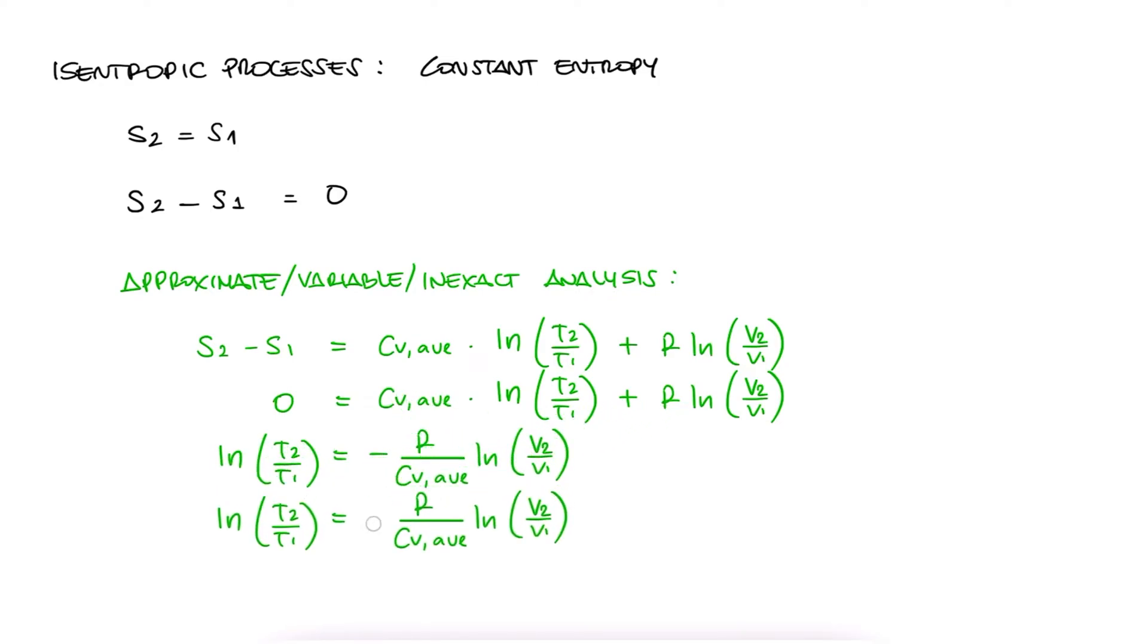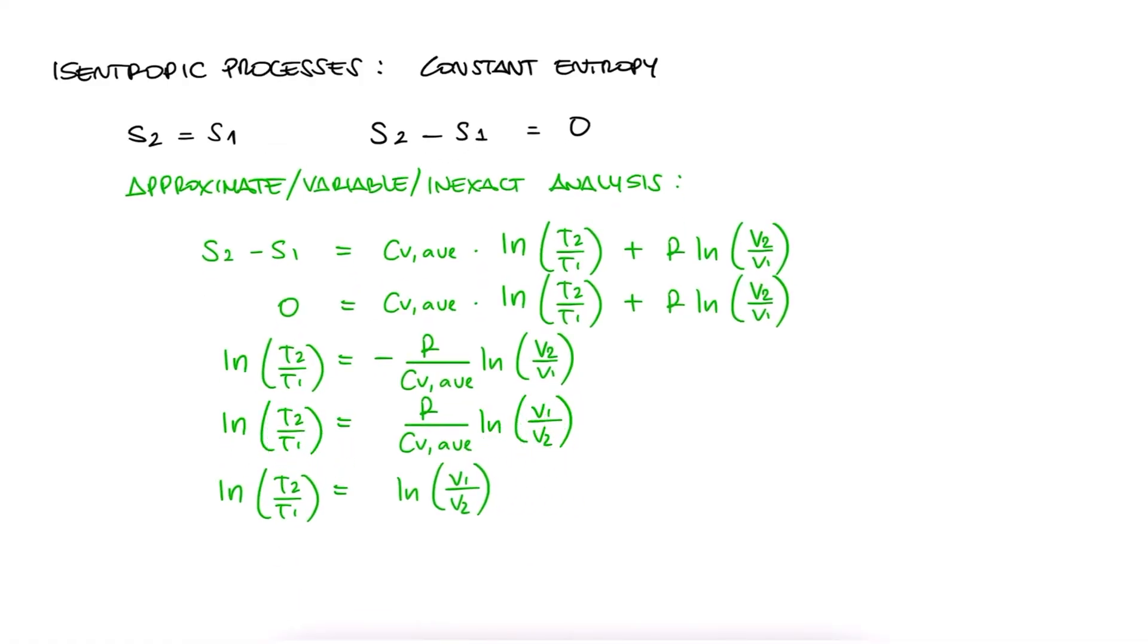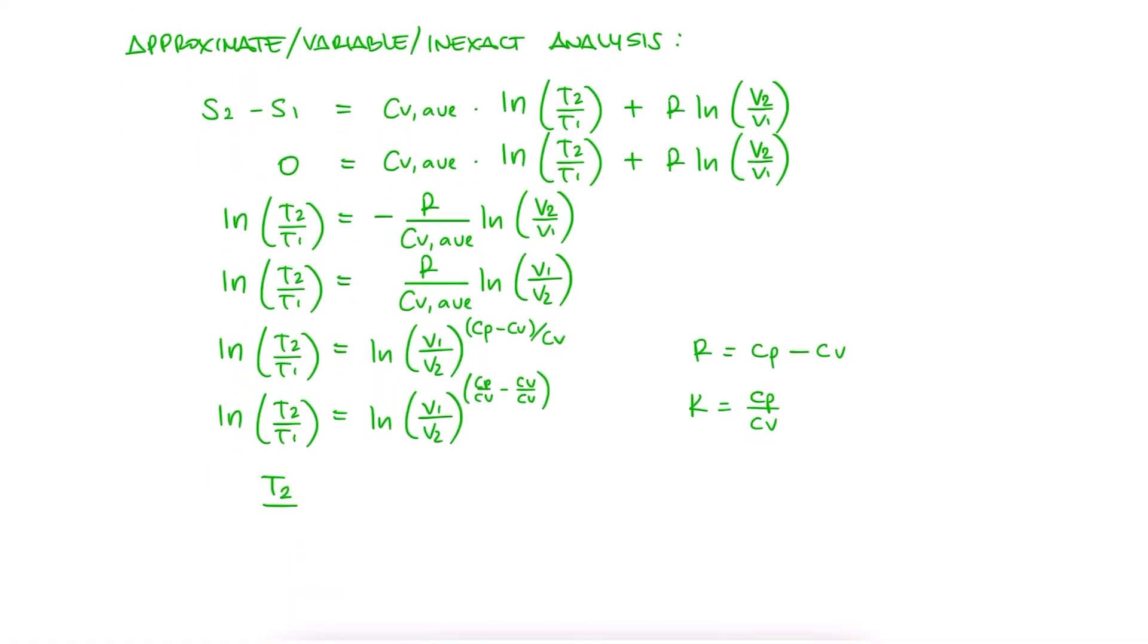We get rid of the minus with the reciprocal of the v's, we use log rules of exponentiation, and since R is Cp minus Cv and k is Cp over Cv, we can simplify this expression as T2 over T1 equal to v1 over v2 to the k minus 1.